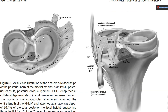Another nice image shows the posterior joint capsule blending in with the posterior oblique ligament and the deep MCL layer — this is the area of interest. You can also appreciate that the meniscotibial ligament is not as broad as the joint capsule insertion, which is broader, so it stops at some point.